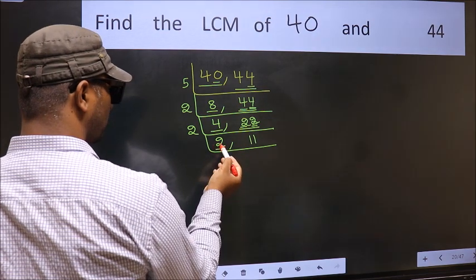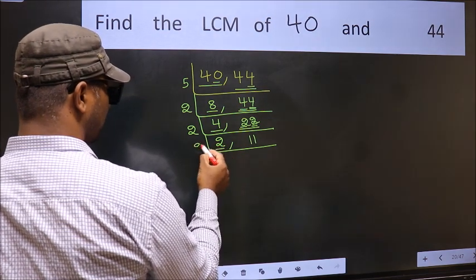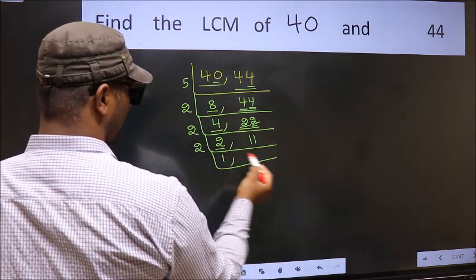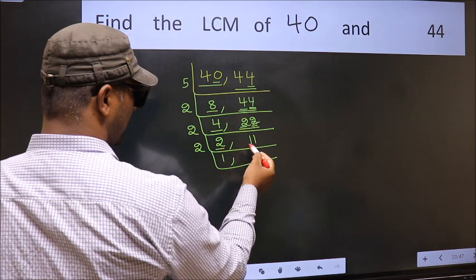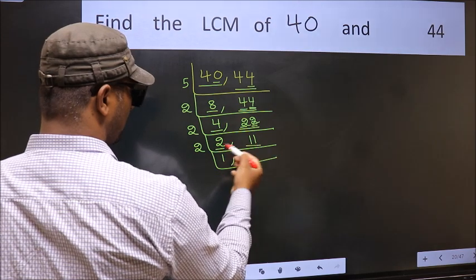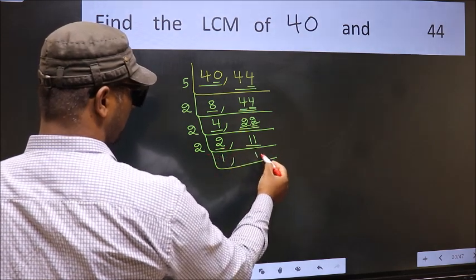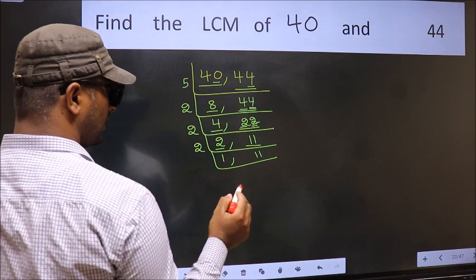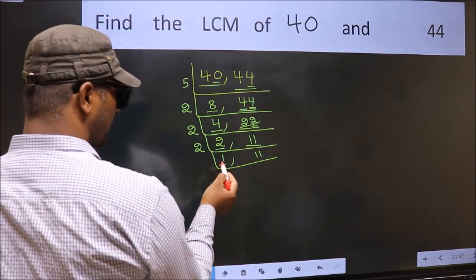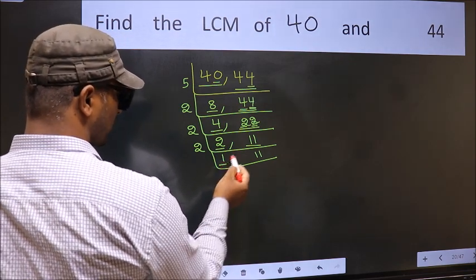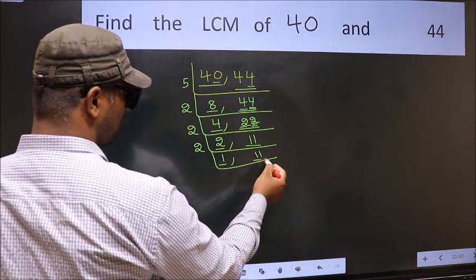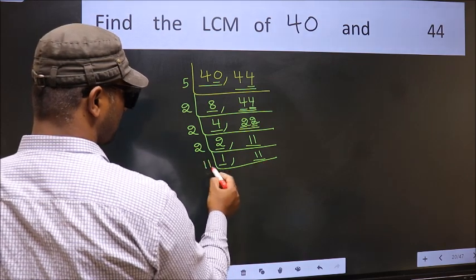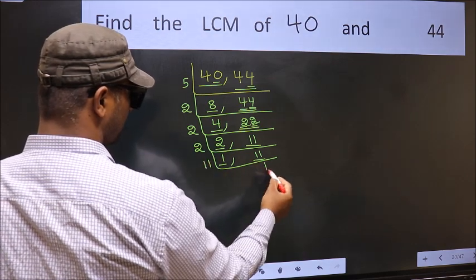Now here we have 2. 2 is a prime number, so 2 ones are 2. The other number is 11 — not divisible by 2, so we write it down as it is. Now we got 1 here, so focus on the other number, 11. 11 is a prime number, so 11 ones are 11.